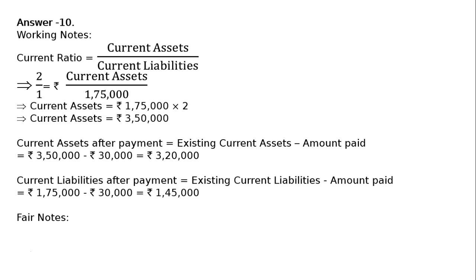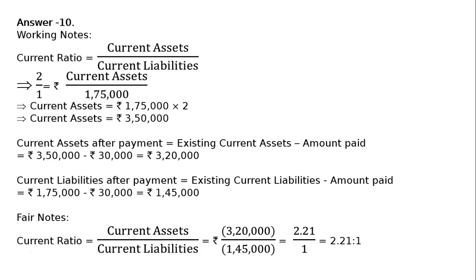We will now find the current ratio after payment, i.e., current assets divided by current liabilities, both after payment: Rs 3,20,000 upon Rs 1,45,000, which equals approximately Rs 2.21 to 1.